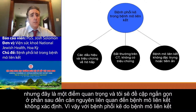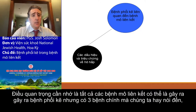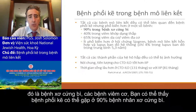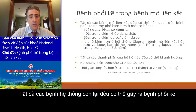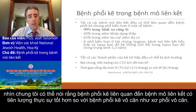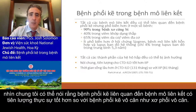Interstitial lung disease and established connective tissue disease — it's important to remember that all of the connective tissue diseases can be associated with ILD, but really there are the three big ones: scleroderma, RA, and the myositis spectrum. You can see interstitial lung disease in up to 90% of patients with scleroderma. In general, the prognosis is better for patients with connective tissue-related interstitial lung disease than with idiopathic diseases such as idiopathic pulmonary fibrosis.